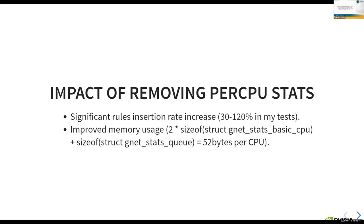This change resulted in a significant increase in insertion rate — 30 to 120% in my tests, with only one or two actions. CLS API supports up to 32 actions per filter, so the more actions using per-CPU allocator, the greater the impact. Even with a single action, it's still 30–50% improvement. Memory usage also improved: the total per-CPU stats is around 52 bytes plus metadata per action, and with modern multi-core servers having hundreds of CPUs, the savings are quite significant.